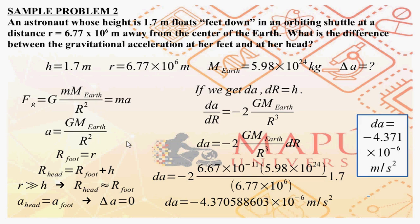We get the acceleration by setting the appropriate value of R. For the acceleration at the feet, r_foot equals small r. From foot to head, the distance is the height of the astronaut 1.7 meters, so r_head equals r_foot plus h. Comparing small r and h, r is very much larger than h, which means r_foot is almost equal to r_head — meaning there would be almost no difference in acceleration between head and foot, so delta a is approximately zero.